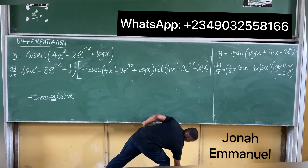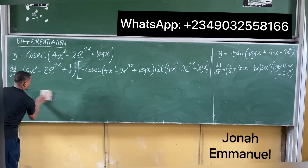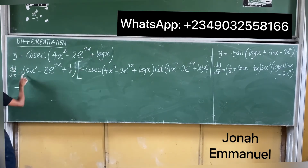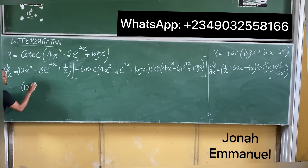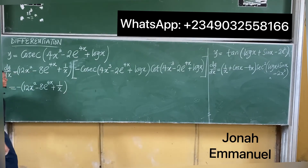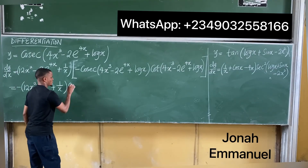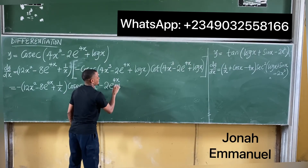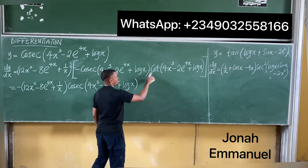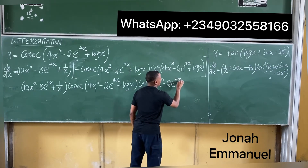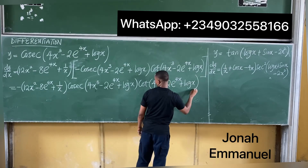Multiply through by the bracket derivative — the minus comes out, giving: minus (12x² - 8e^(4x) + 1/x) × cosec(4x³ - 2e^(4x) + log x) × cot(4x³ - 2e^(4x) + log x). That is your final answer.